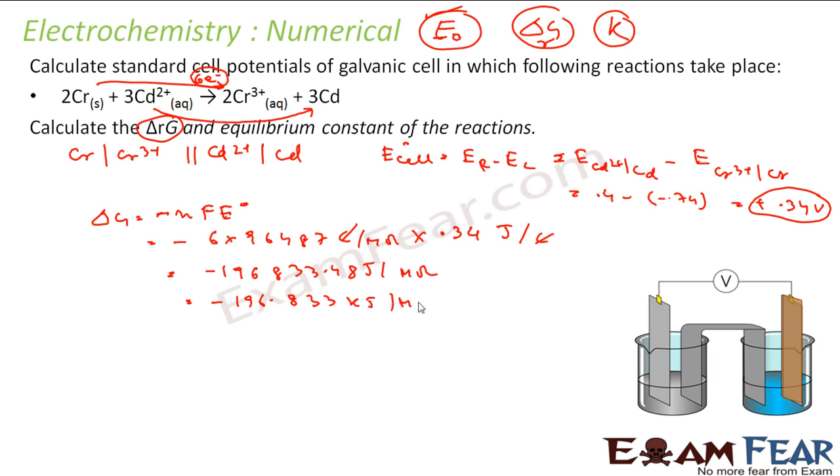I have to find K, so we can use that ΔG is nothing but minus RT ln K.